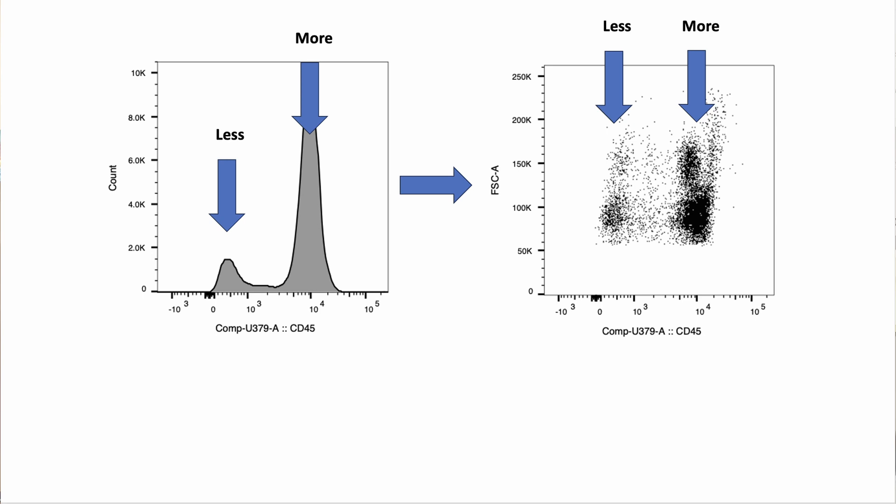So you interpret this the same way as you do a histogram. Signals with a low intensity on the scale are going to have less fluorescence. As you increase your intensity value, you're going to have more fluorescence.